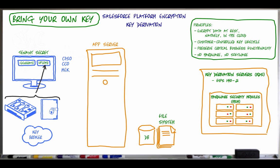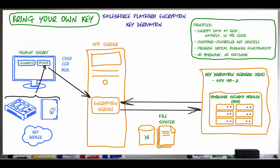An SHA-256 hash of the plain text tenant secret encoded in standard base64 is also uploaded. This encrypted tenant secret and hashed plain text tenant secret are then sent to the encryption service, which passes them to the key derivation server. The key derivation server derives the organization-specific BYOK-derived encryption key to unwrap the certificate's private key. The tenant secret is decrypted using the BYOK certificate's private key, then hashed using SHA-256 and compared to the SHA-256 hash provided by the customer. If the hashes match, the key derivation server encrypts the tenant secret with the per-release tenant wrapping key, then sends it back to the encryption service, which stores it encrypted in the database. These uploads can also take place using the API, as can additional operations such as archiving, exporting, or destroying tenant secrets.